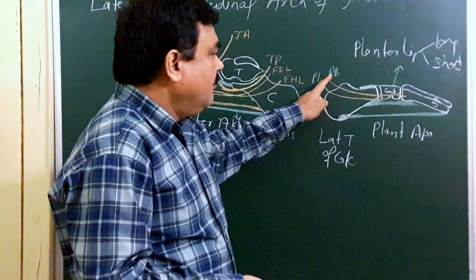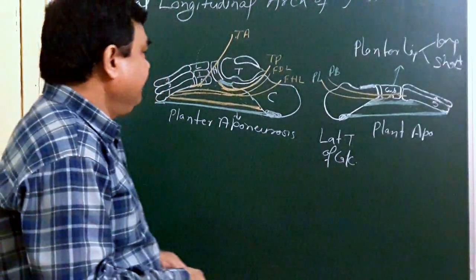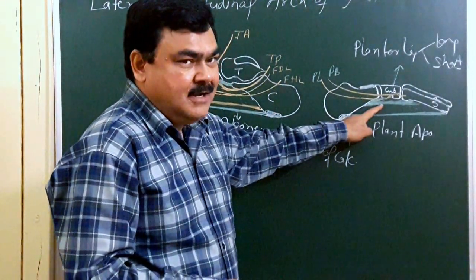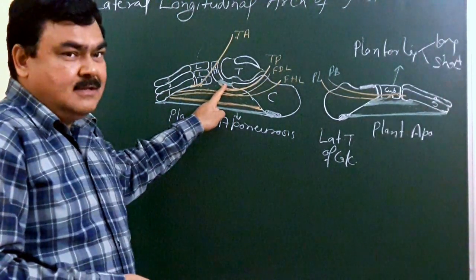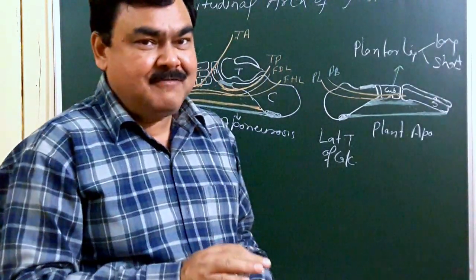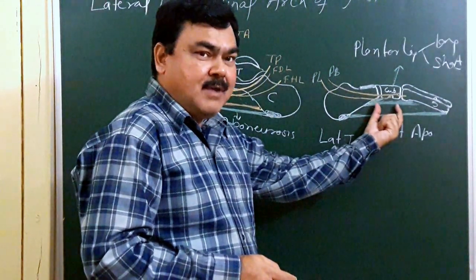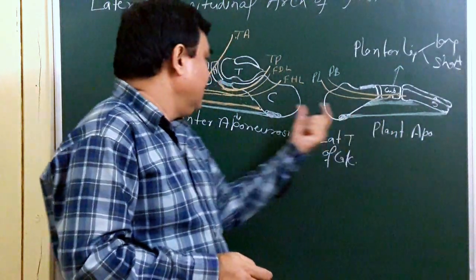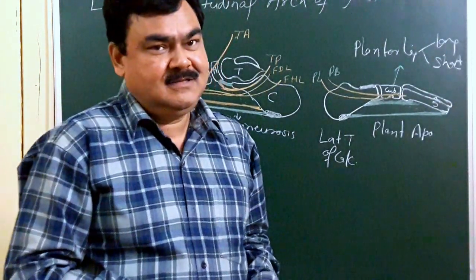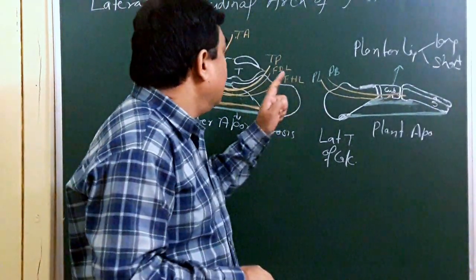So these are the peroneus longus tendon and peroneus brevis tendon forming the sling. If the plantar ligaments become weak, this results in flat foot — pes planus. In cases of contraction of the short and long plantar ligaments and plantar aponeurosis, contraction of these structures forms pes cavus, which is high arch foot. This is all about the lateral longitudinal arch of the foot.